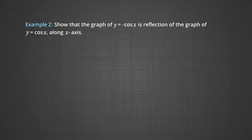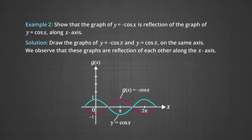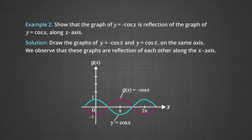In Example 2, we will show that the graph of y = -cos x is a reflection of the graph y = cos x along the x-axis. We draw the graphs of y = -cos x and y = cos x on the same axis. The pink line represents the graph of -cos x, the blue line represents y = cos x, and we observe that one is a reflection of the other in the x-axis.